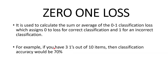Zero-one loss. Zero-one loss calculates the sum or average classification loss. It assigns zero for a correct classification and one for an incorrect classification. For example, if you have a list of 10 items and one is assigned three times, that means you got zero assigned seven times, so your classification accuracy would be 70 percent.